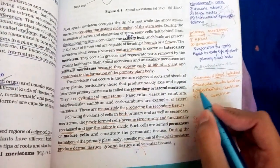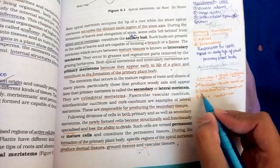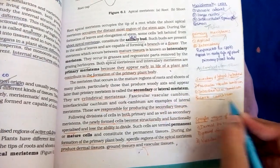Secondary meristem is three types: Fascicular and vascular cambium, interfascicular cambium, and cork cambium.